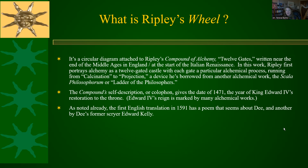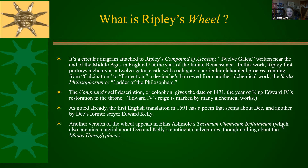The first English translation in 1591 has a poem that seems about Dee and another by Edward Kelly. There will be yet another version of the wheel and the Compound of Alchemy in Elias Ashmole's Theatrum Chemicum Britannicum. Remember, we have three people who achieved the projection of the Philosopher's Stone — Ripley, Norton, and Kelly — and two others who said they've had it explained to them, Dee and Ashmole. Another version appears in the Theatrum Chemicum Britannicum put together by Ashmole, which also has a lot of material about Dee and Kelly's continental adventures in the 1580s, though interestingly it has nothing about the Monus Hieroglyphica.